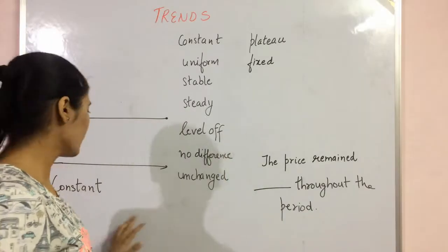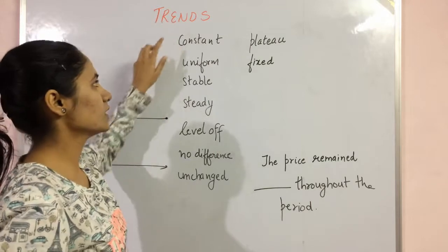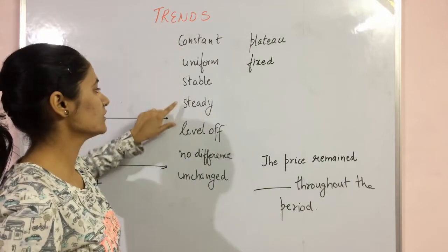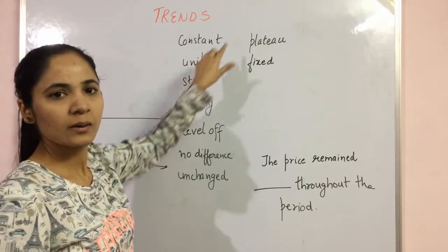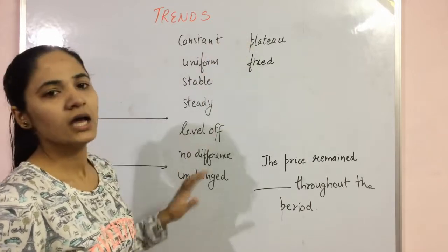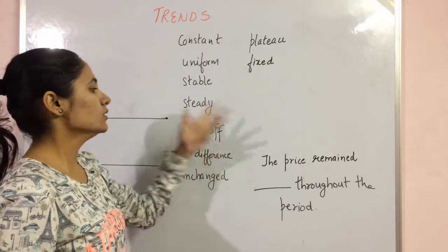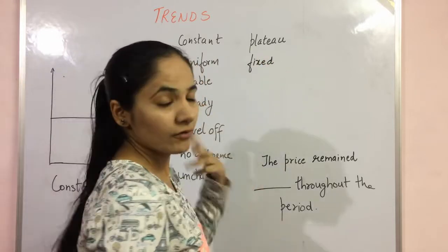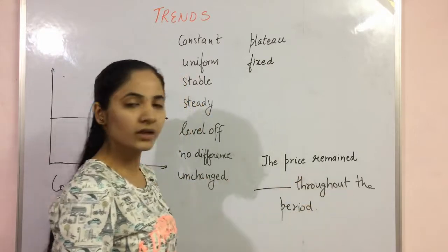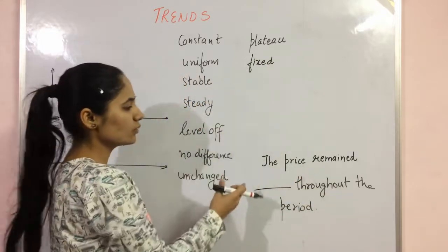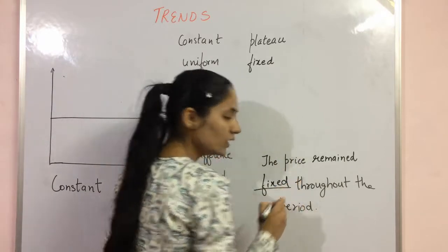The last trend is the constant trend. For this, we can use: uniform, stable, steady, level off, no difference, unchanged, plateau, and fixed. The usage also varies with tense. For example: 'The price remained fixed throughout the period.' Note that the usage of these words may sometimes require restructuring the sentence to fit grammatically.